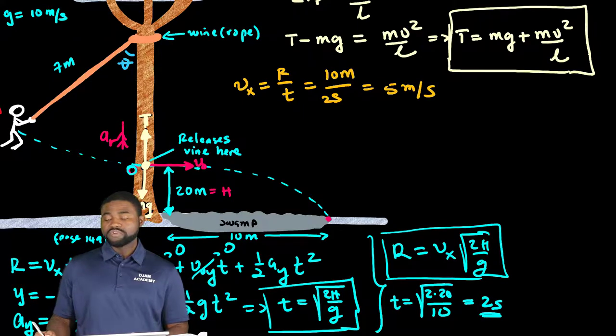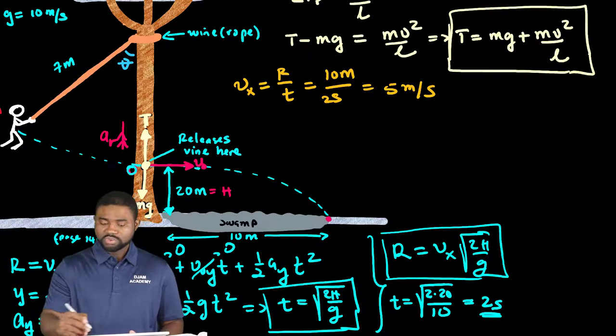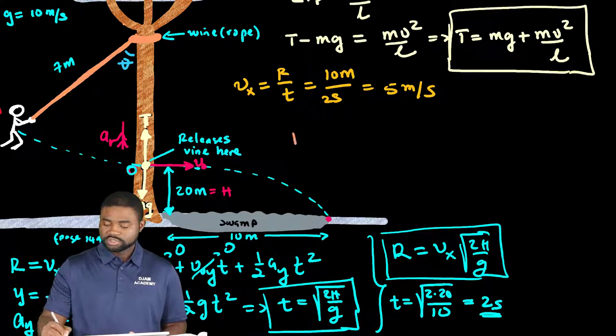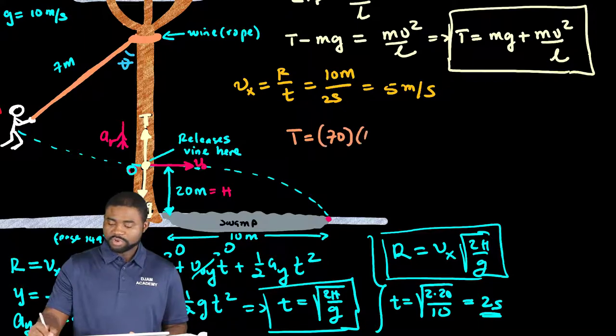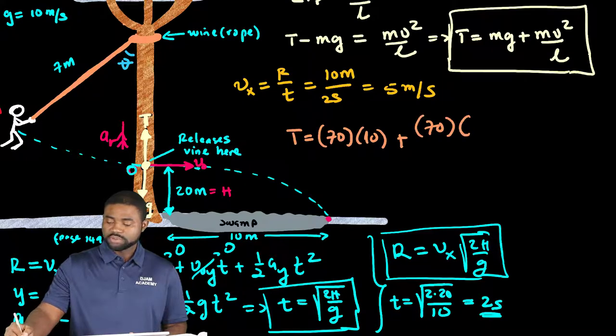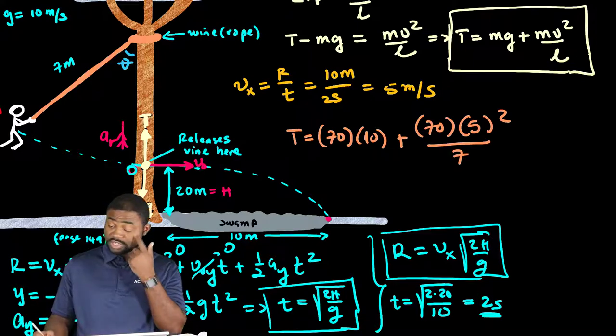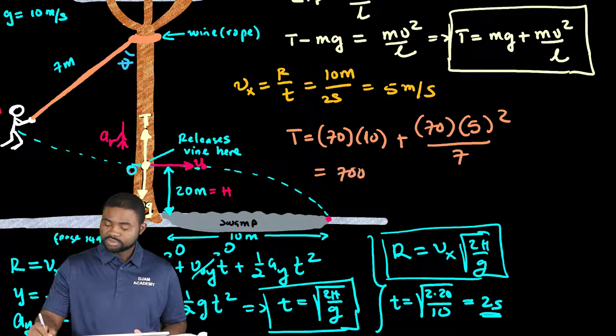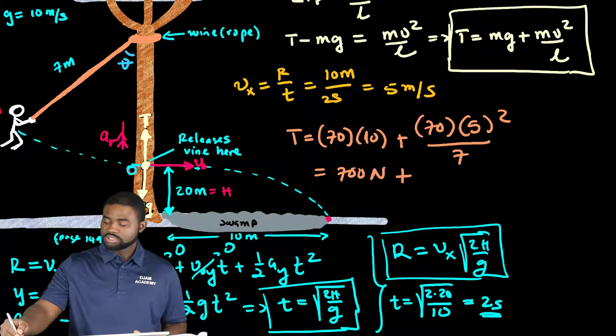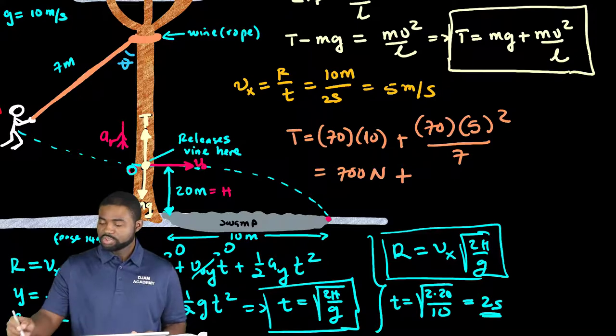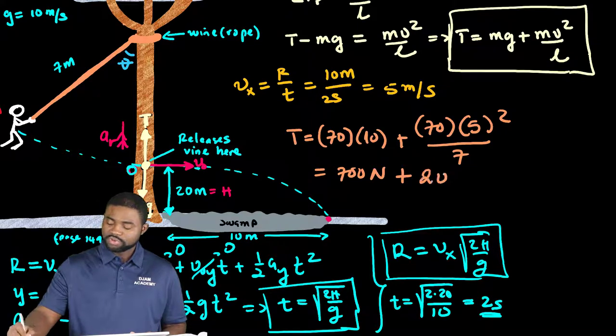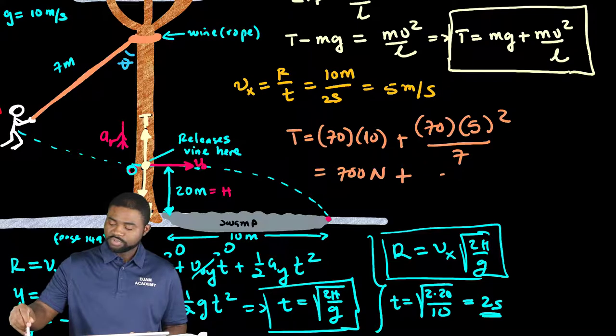Given that we know the value of v, we can therefore solve for T. T will be equal to 70 multiplied by 10 plus 70 multiplied by 5 all squared all divided by 7 because the length is 7. This is equal to 700 newtons plus, this is 25, 25 multiplied by 10, that will give us 250 newtons.